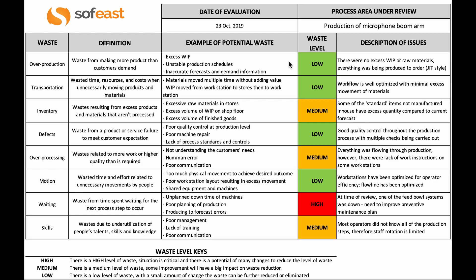These are simple definitions of what I went through, along with some examples. For inventory: too much raw material, work-in-process on the shop floor, or finished goods. These are some very typical ways that we can detect this type of waste. For motion: too much physical movement, maybe poor layout resulting in excess movement by the operators.